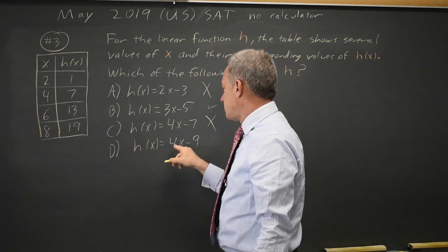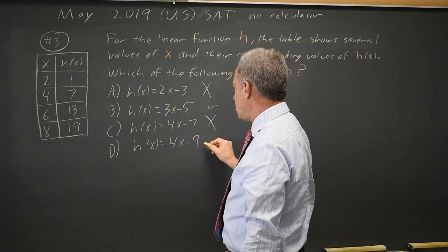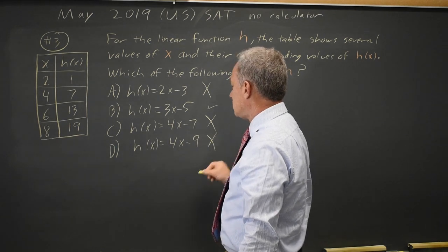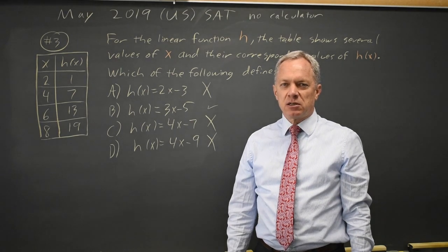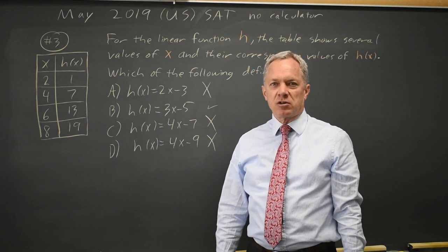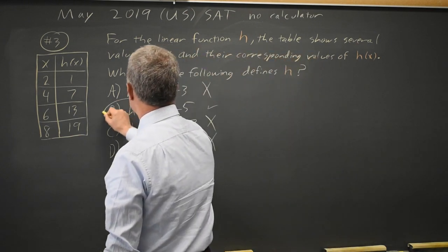And 4 times 8 is still 32. And 32 minus 9 is 23, which is not 19, so choice D is wrong. Choice B is the only choice where the last point is on the graph of that equation. So choice B must be my correct answer.